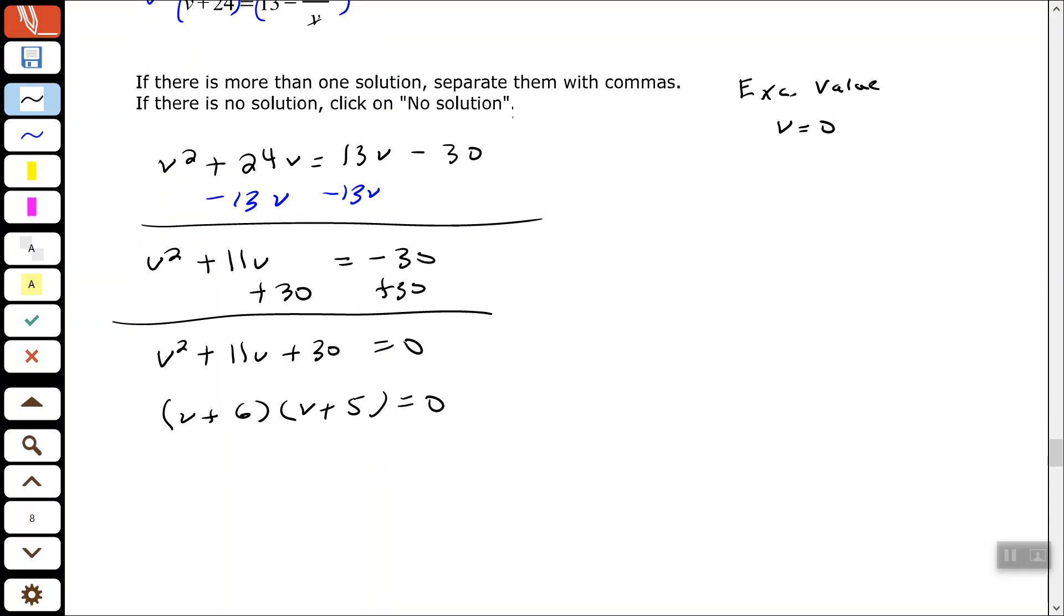Now, when you solve an equation like this, and you have two binomials multiplied times each other equal to zero, the way that you solve this and find actually two solutions here, you take each factor and set it equal to zero. So V plus six equals zero and V plus five equals zero. Subtract six from both sides, subtract five from both sides.